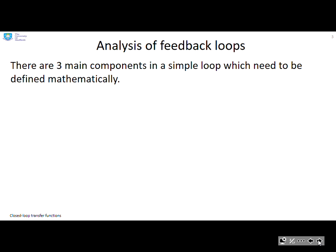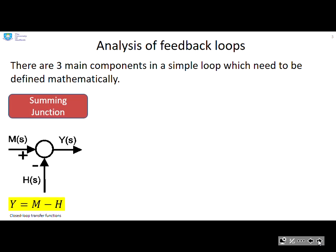There are three main components in a simple loop which need to be defined mathematically. There's a summing junction. So you can see the picture of what it looks like. And in simple terms, it's just addition or subtraction based upon what signs you can see on the arrows coming into the junction.